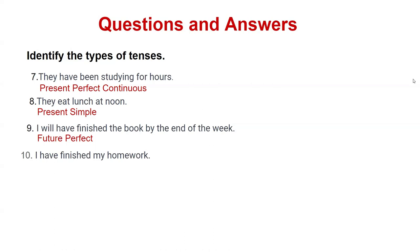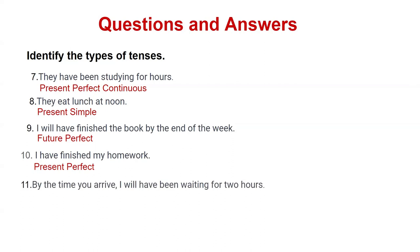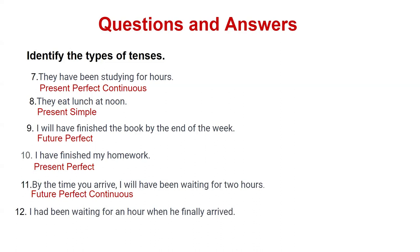'I have finished my homework' — present perfect. Next: 'By the time you arrive, I will have been waiting for two hours' — 'will have been waiting' means this is future perfect continuous. Last: 'had been waiting for an hour' — this is past perfect continuous.